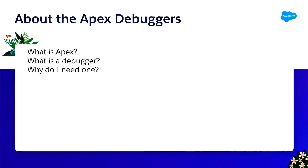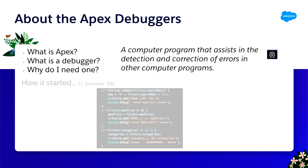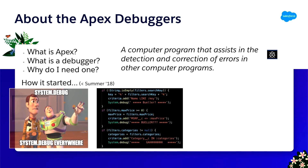To start with the Apex debuggers, a few questions to set the stage. What is Apex? It is the proprietary coding language used in Salesforce applications to manage and manipulate data. What is a debugger? A common definition is a computer program that assists in the detection and correction of errors in other computer programs. And why do you need one? Anything that makes developers' jobs and lives easier is something we want to invest in.